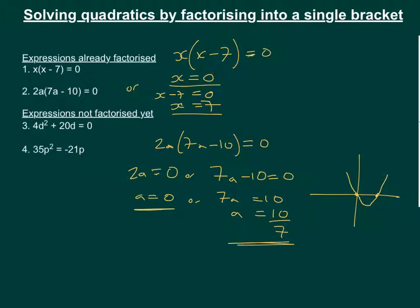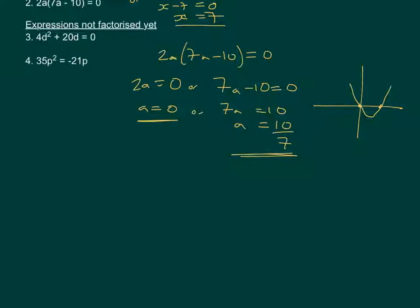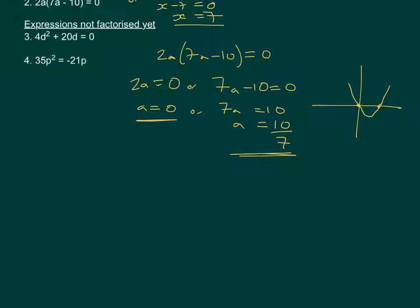OK, let's move on to the last couple of questions, which are expressions which have not been factorised yet. So you can see those first couple are quite easy. If we look at some expressions that haven't yet been factorised, we've got 4d squared plus 20d equals 0. And we're going to factorise this as much as possible. So we can take out 4, and we can take out d, and we'll be left with (d plus 5) on the inside.